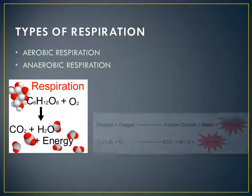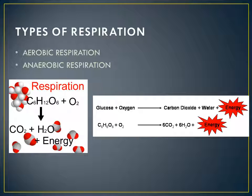Anaerobic respiration takes place in the absence of oxygen. In anaerobic respiration, there is incomplete oxidation of glucose. Carbon dioxide, ethyl alcohol, and energy are the end products. The energy released during this process is much less as compared to that released in aerobic respiration. This is the basic difference between aerobic and anaerobic respiration.